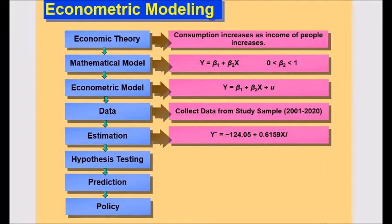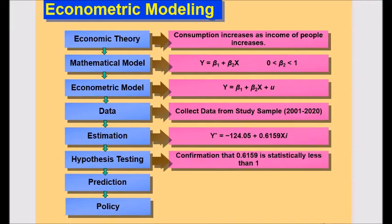The next step is hypothesis testing. In this step, you need to determine that is 0.6159 you have already got is statistically less than 1 or not. You will use statistical inference or hypothesis testing to achieve this goal.